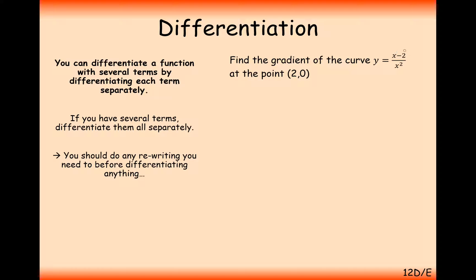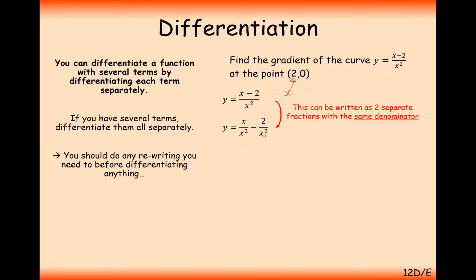Now let's try a question where we have to split up a fraction. Find the gradient of the curve y equals (x minus 2) over x squared at the point (2, 0). The x coordinate 2 is our important value. We split the fraction into two separate numerators each divided by the same denominator: x over x squared minus 2 over x squared. Simplify as indices: x to the minus 1 minus 2x to the minus 2. Now differentiate: the first term gives minus x to the minus 2, and for the second term, minus 2 times minus 2 gives 4, with power reduced to x to the minus 3.